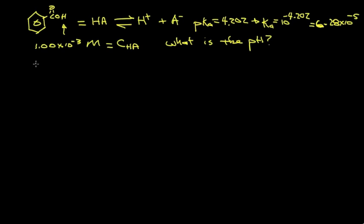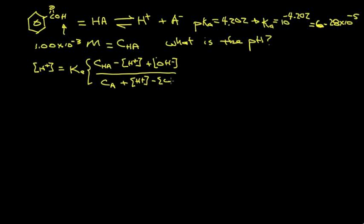We start with our general equation for hydrogen ion for weak acid dissociation. It's Ka times CHA minus H-plus plus hydroxide, over the analytical concentration of the conjugate base plus H-plus minus OH.